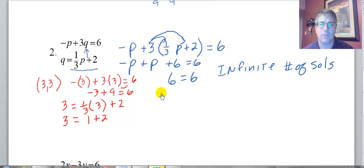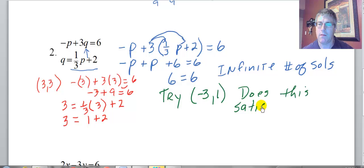How about this? I'm going to ask you to put this in your notes. Try the ordered pair negative 3, 1. Does this satisfy both equations? So pause the video here. You put in negative 3, 1. These are in alpha order, so negative 3 would be the P and 1 would be the Q. And when you're finished with that, continue on with the video.